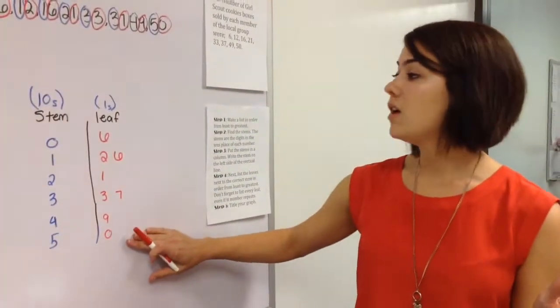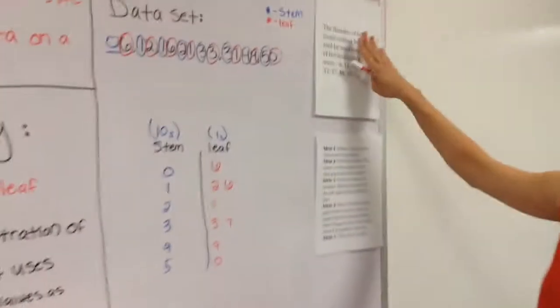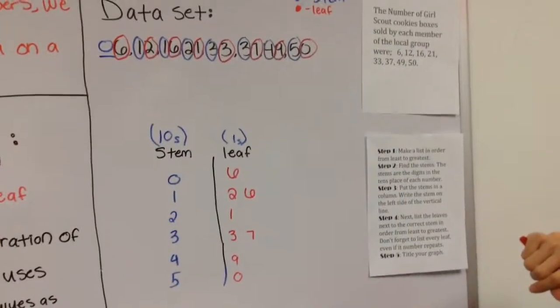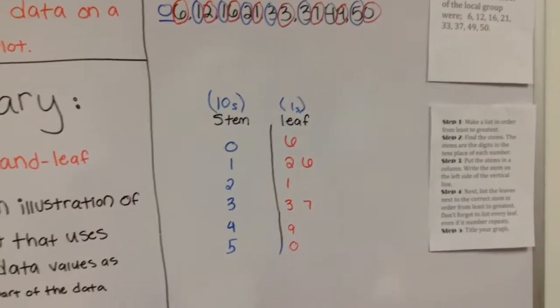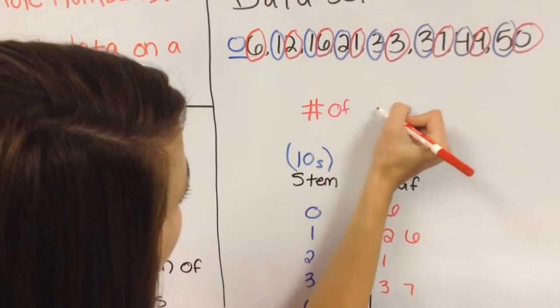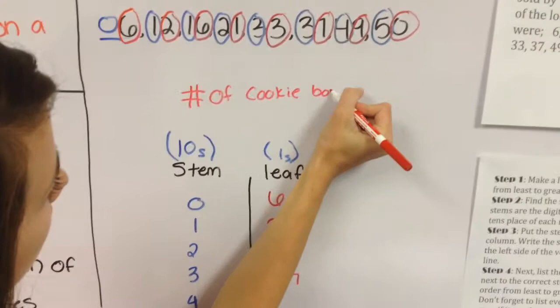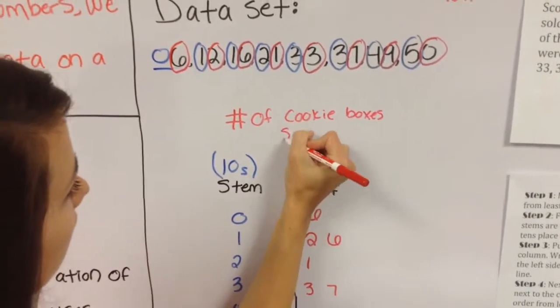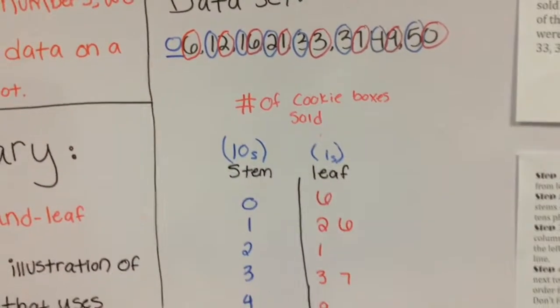So after we've listed all our values on our plot, we're going to go ahead and do number step five, and that's title your graph. So we go back to our problem for that, and it says the number of Girl Scout cookie boxes sold by each member of the local group. So for our title, I'm going to put number of cookie boxes sold.